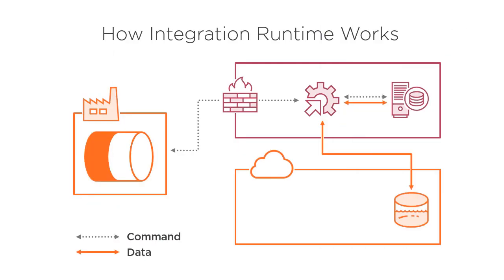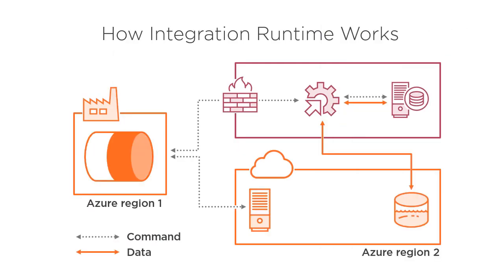Once the data is copied, the second activity begins and data factory sends a command to the Azure integration runtime, which then dispatches the activity to Data Lake Analytics to transform the data and store it in Data Lake Store. Note that your data factory instance and the Azure integration runtime can be in different regions — the integration runtime is usually closer to the data source.